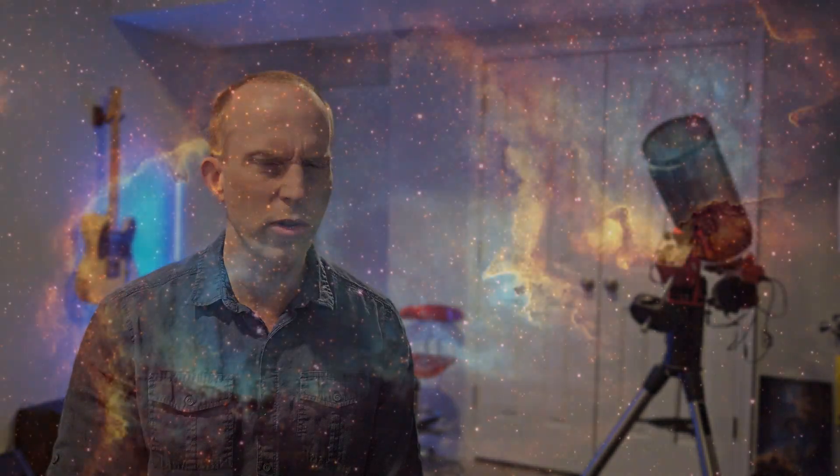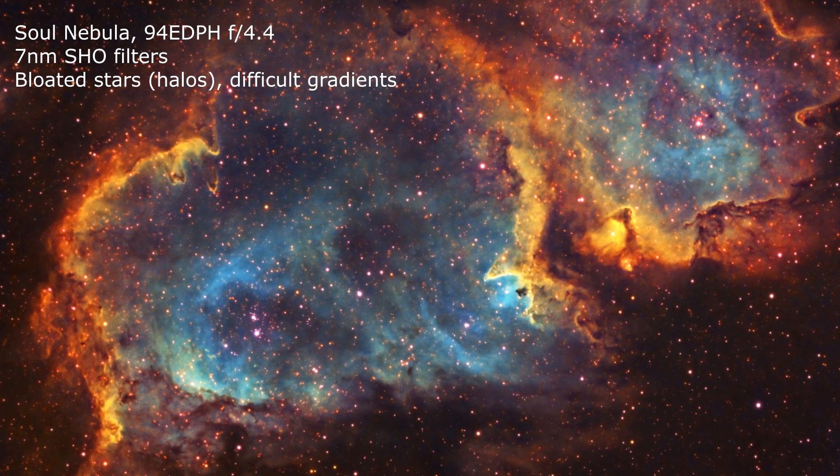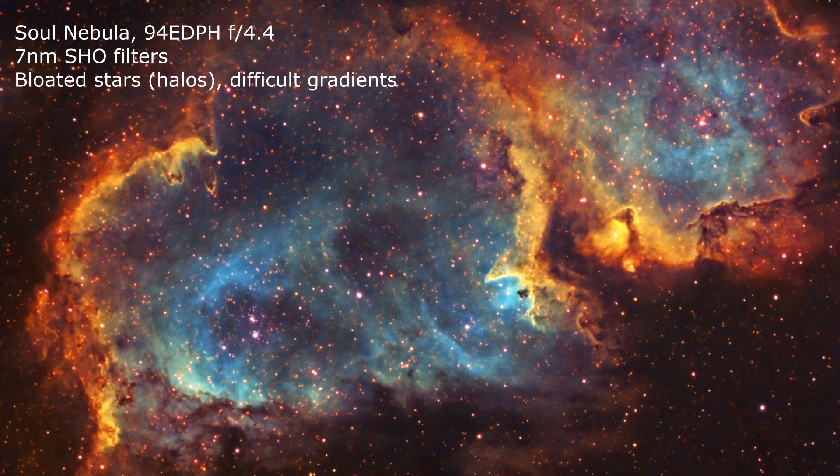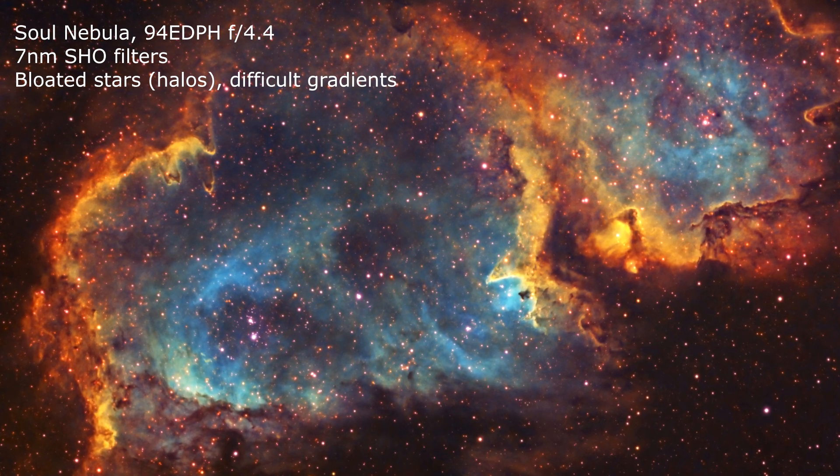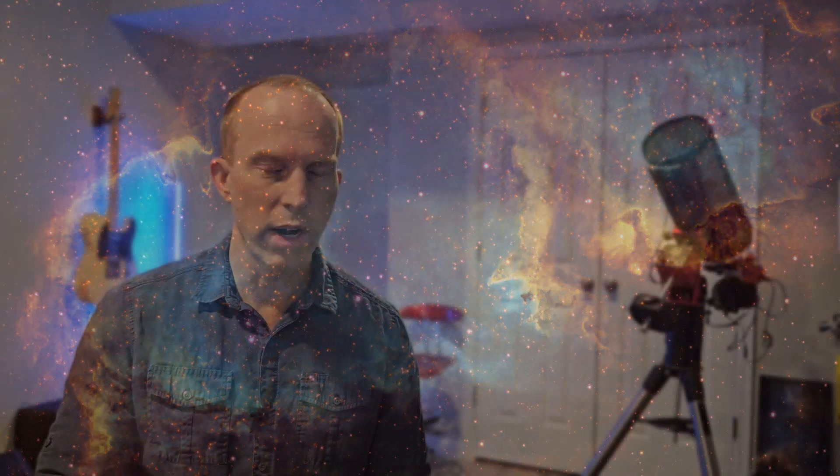I find that my 3.5 nanometer set works very well at blocking the light pollution gradients and providing excellent contrast. But even at 3.5 nanometers, the O3 stack still shows fairly significant gradient. I used to own a set of seven nanometer filters and they just weren't cutting it. The stars were very bloated and difficult to control and there were gradients in every channel. So I highly recommend getting the more narrow the better. 3 nanometers seems to be pretty standard nowadays, especially from heavy light pollution.